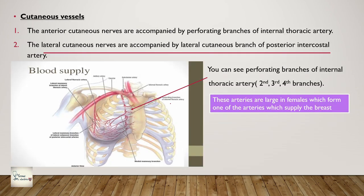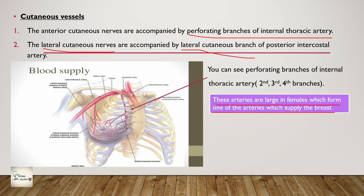The cutaneous levels are very important in the case of females because these are the ones which supply the breast. The anterior cutaneous nerves accompany the perforating branches of the internal thoracic artery - it's a very important artery. The lateral cutaneous nerves are accompanied by the lateral cutaneous branch of the posterior intercostal artery, so it's the posterior intercostal artery. You can see the second, third, and fourth perforating branches of the internal thoracic artery, and supply also comes from the lateral thoracic artery with its lateral mammary branches.